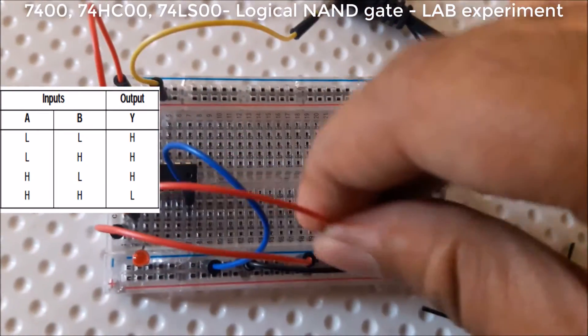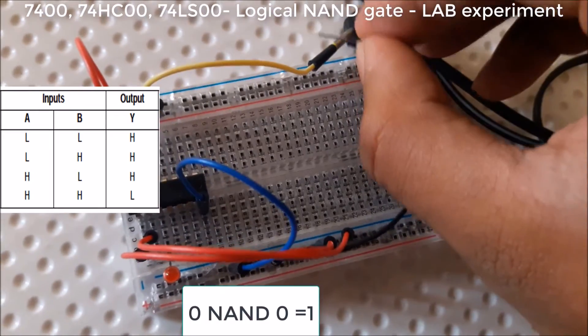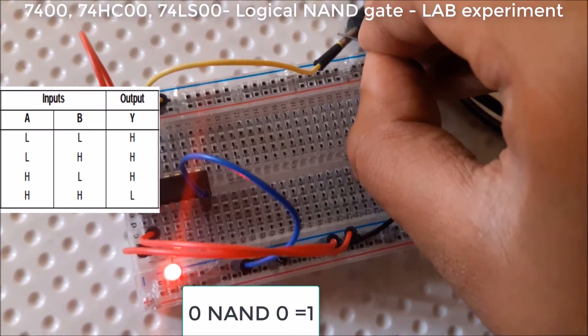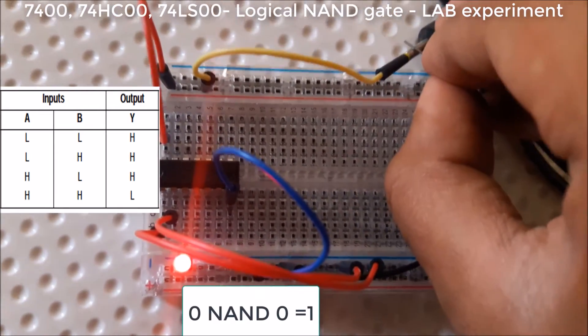Let's see what happens for 0 and 0. The 0 and 0 is also giving output 1. So for NAND gate, 0 and 0 is giving 1.